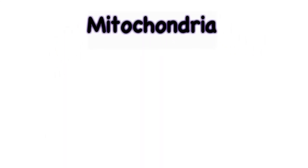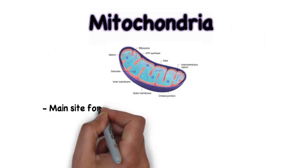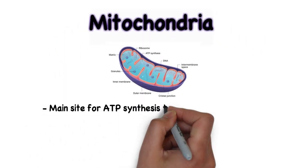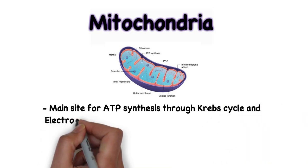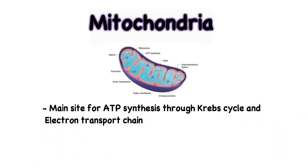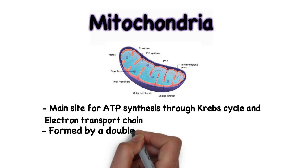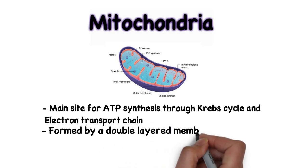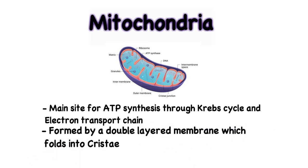Mitochondria are the powerhouse of the cell as they are the main site for ATP synthesis through the Krebs cycle and the electron transport chain. The mitochondria is formed by a double-layered membrane which forms folds called cristae within the organelle.